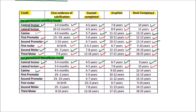For the mandibular canine, the first evidence of calcification occurs between 4 to 5 months, enamel is completed by 6 to 7 years, eruption occurs by 9 to 10 years, and the root is completed by 12 to 14 years.